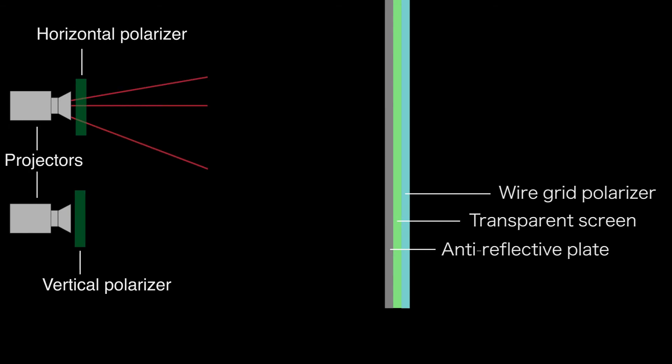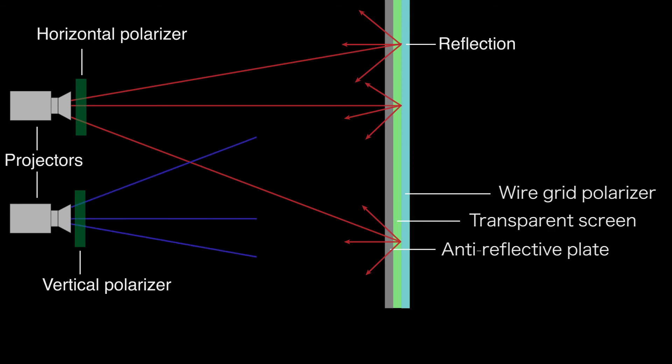Thus, when horizontally polarized lights are projected, an image reflected by the wire grid polarizers appears on the front side. In contrast, when vertically polarized lights are projected, an image that passes through the wire grid polarizer appears on the rear side.